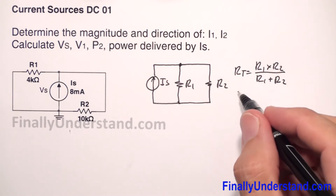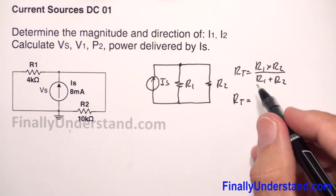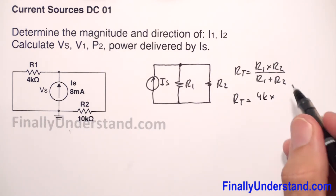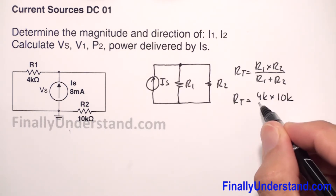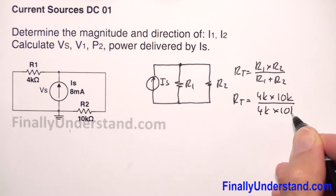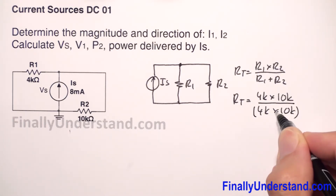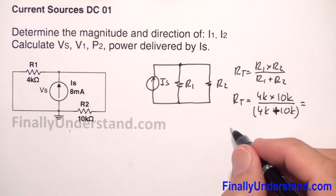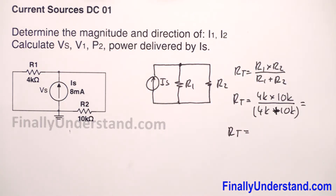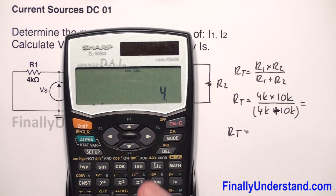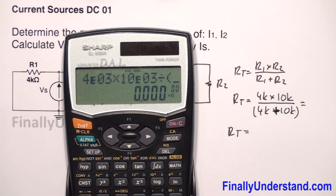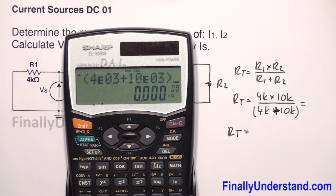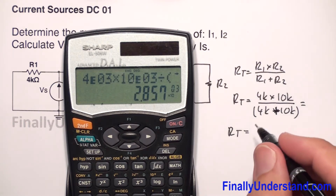So R_total is equal to R1, which is 4kΩ, times 10kΩ, over 4k plus 10k. So what we are supposed to do is simply use the calculator and find R_total. I have 4×10³ times 10×10³ divided by (4×10³ plus 10×10³). This is equal to 2.85 kΩ.